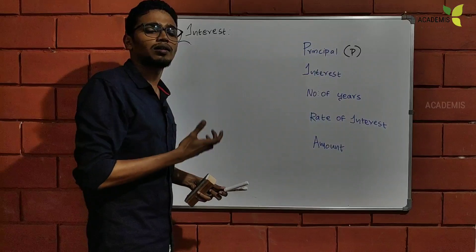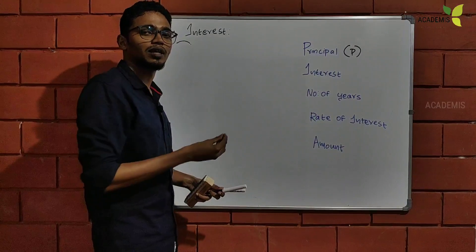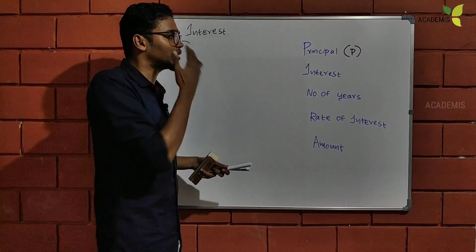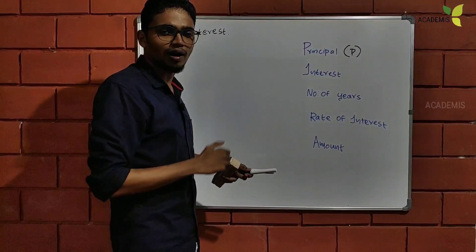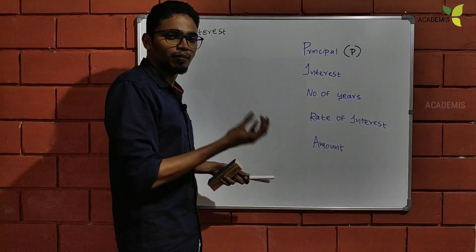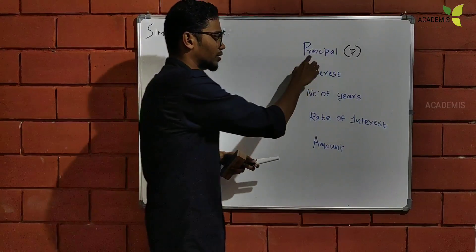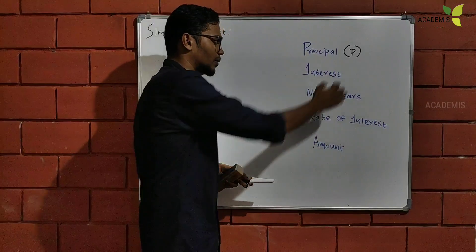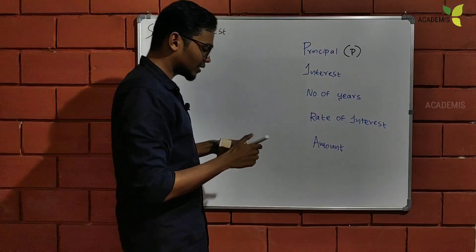We need one person to steal, we need one person to buy, we need one person to invest. Why don't we define the principle, and how do we use the two parameters? What is principal? Principal is denoted by the letter P.